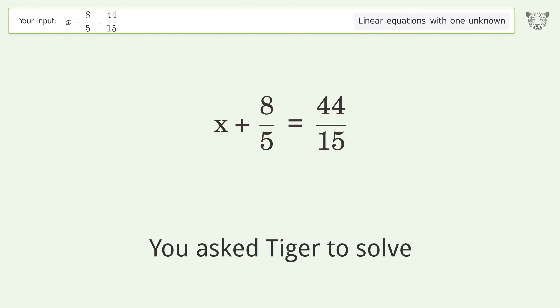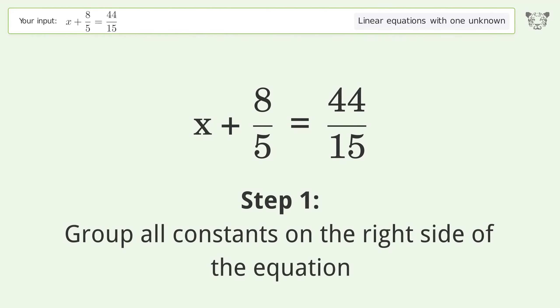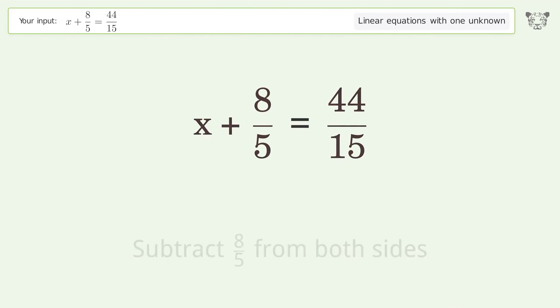You asked Tiger to solve this. It deals with linear equations with one unknown. The final result is x equals 4 over 3. Let's solve it step by step. Group all constants on the right side of the equation. Subtract 8 over 5 from both sides.